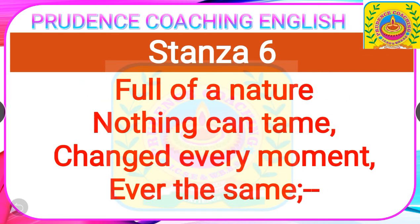Now the sixth stanza: 'Full of nature, nothing can be tame, changed every moment, ever the same.' The poet says that the fountain is a part of nature — no one can control it or stop it from flowing. It keeps flowing upward. The water flows in such a perfect way that it always looks similar. Yeh kaita hai ki fawara prakittik shakti se bhara hua hai. Isse niyantran karna asambhav hai.